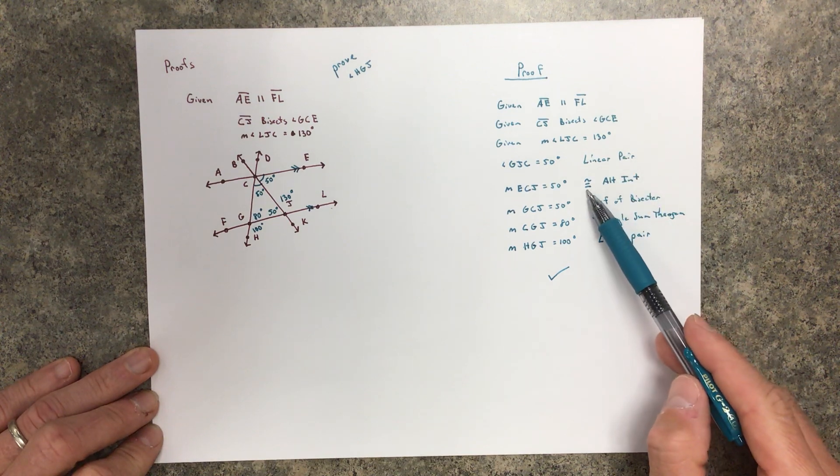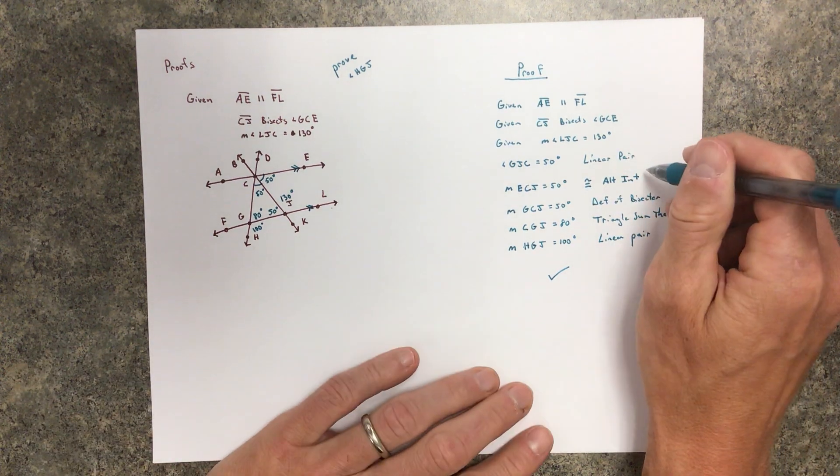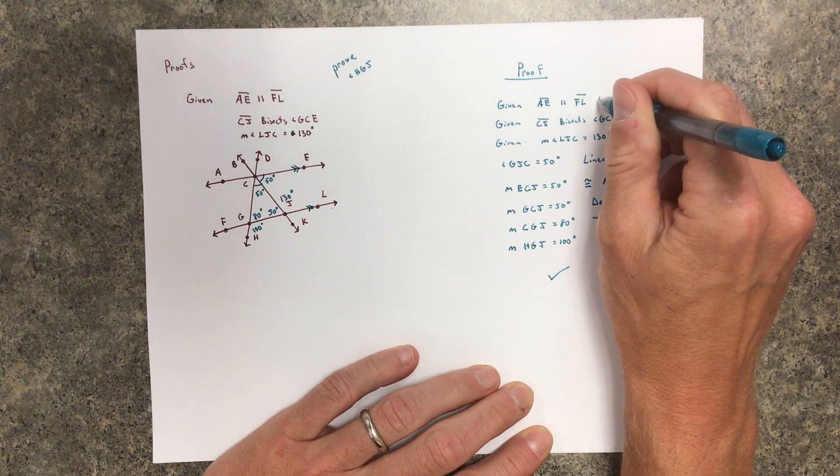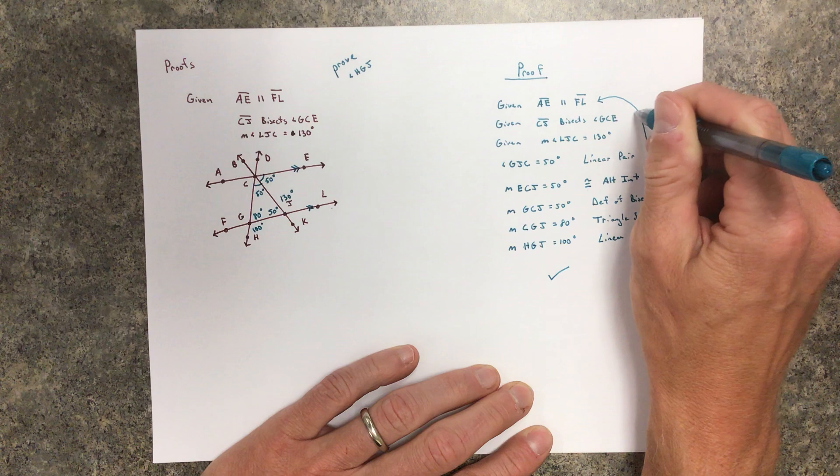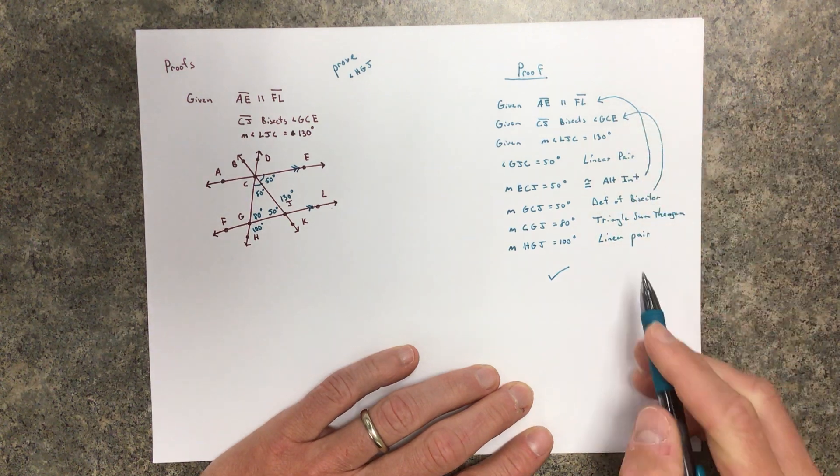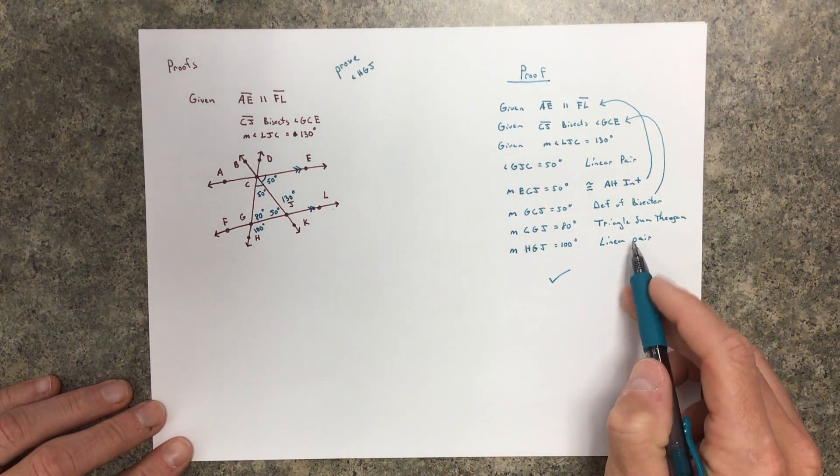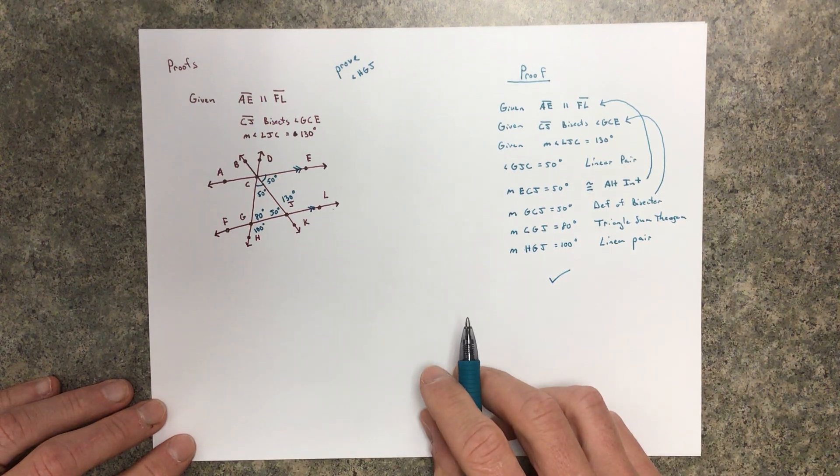Linear pairs, congruent alternate interiors. This is true because that was true. Definition of bisector, we already knew it bisected. Triangle sum theorem is a theorem we know, and we know about properties of what it means to be a linear pair.